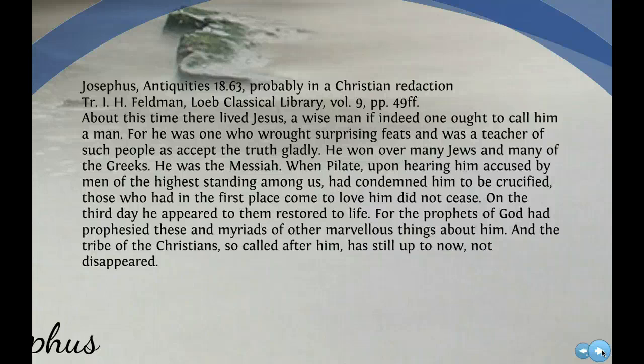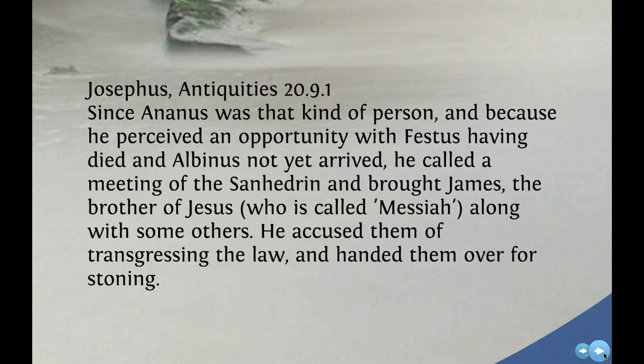This second reference is what most scholars consider genuine: 'Since Annas was that kind of person, and because he perceived an opportunity with Festus having died and Albinus not yet arrived, he called a meeting of the Sanhedrin and brought James, the brother of Jesus, who is called Messiah, along with some others. He accused them of transgressing the law and handed them over for stoning.' This is something we know happened as referenced in the book of Acts - certain followers of Jesus were brought before the Sanhedrin and stoned. Stephen is the most prominent example in Acts. This is the kind of thing a Jew would certainly write, giving an account of the death of James.